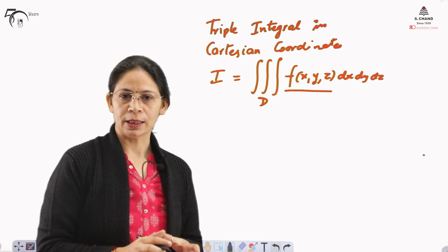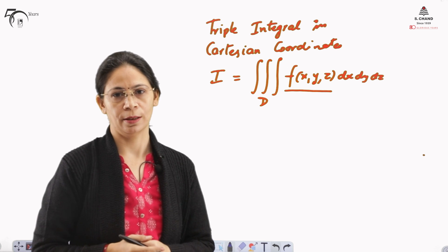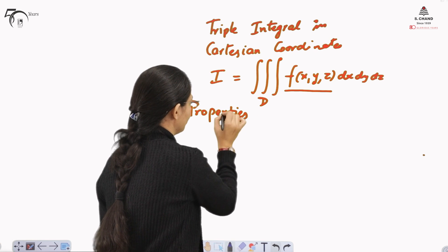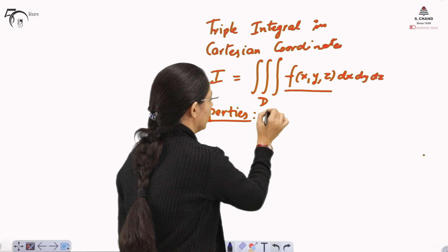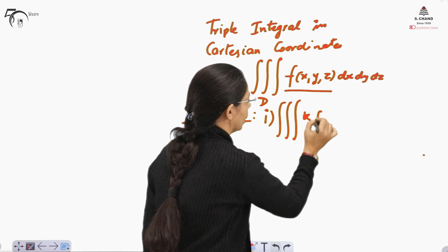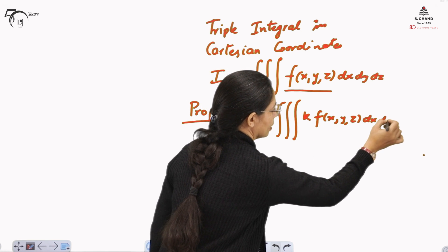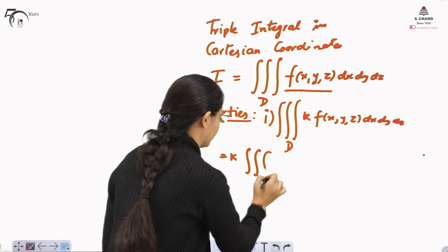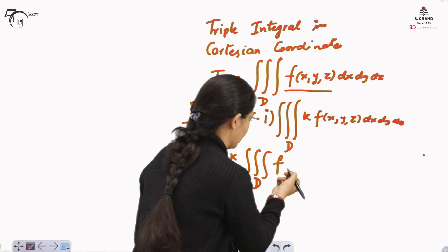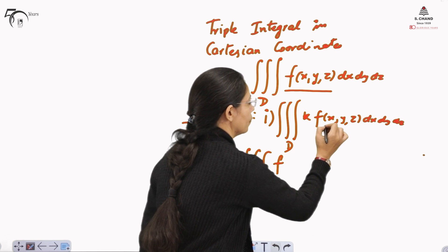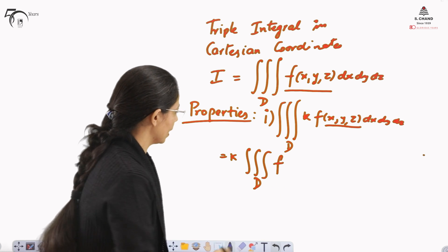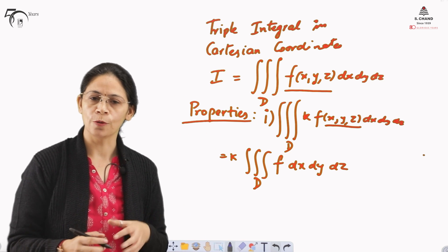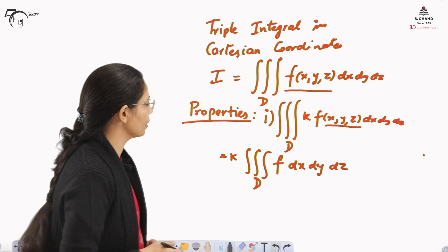The integration rules for triple integral will be similar to those of single integral and double integral. Let us revise the properties of integration. The first property is that if we multiply any constant k to the integrand f(x, y, z) dx dy dz over region D, then k can be taken out. For convenience, we write f to represent f(x, y, z), so it becomes k times the integral of f dx dy dz. This property we already know from single integral and double integral, and it carries forward to triple integral.